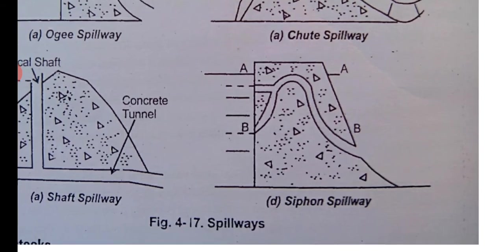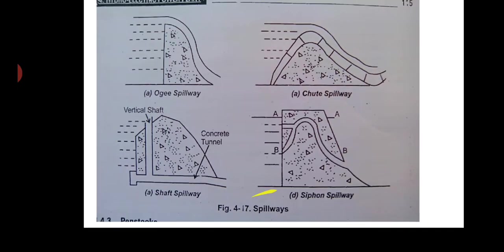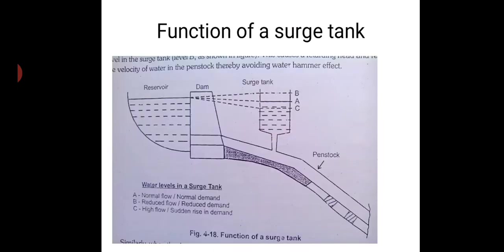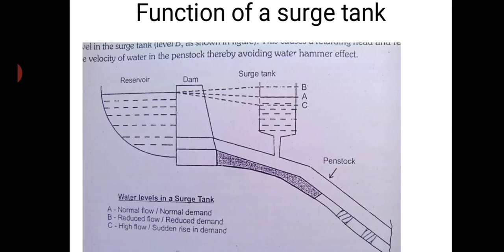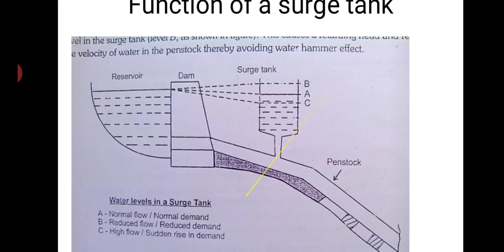Lastly, there is the siphon spillway. A concrete block is made with a passage inside — when water comes up to level A, it flows through the passage and ultimately goes out from one end to the other. This is known as the siphon spillway.